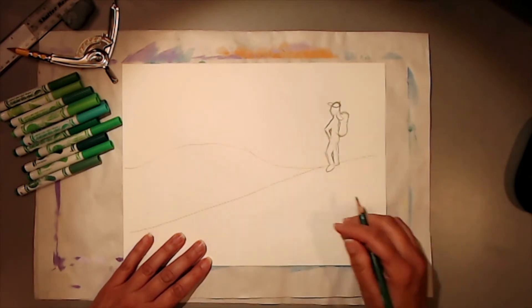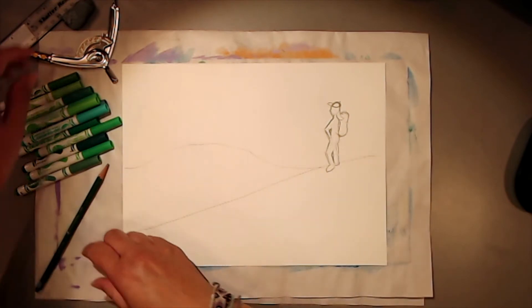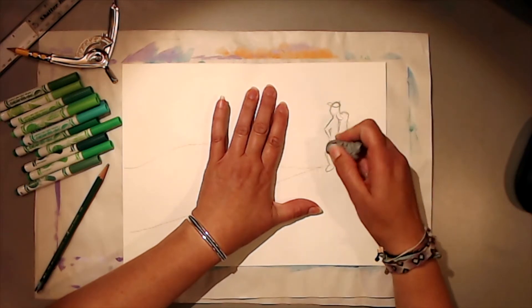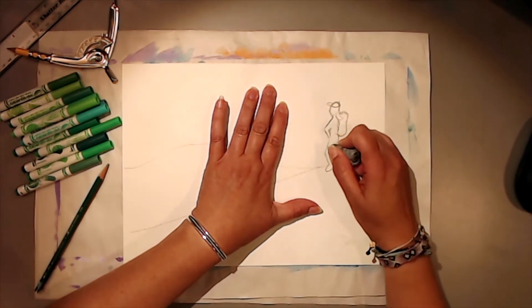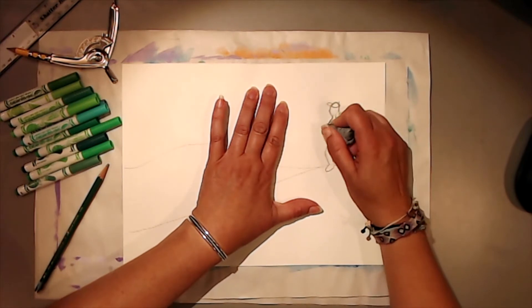Okay, so now I have a very rough sketch. And I'm going to erase some of these extra lines to make it easier to use my markers and know where I'm going.